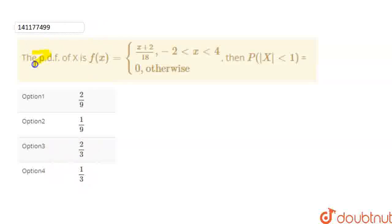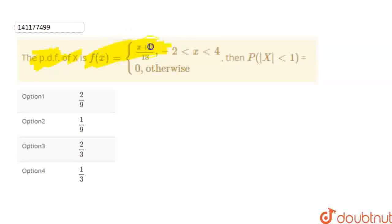So in this question we have a probability density function of random variable x, where f(x) = (x + 2)/18, where x is from minus 2 to 4, and for the rest of the cases f(x) is equal to 0.